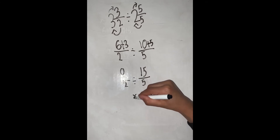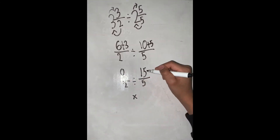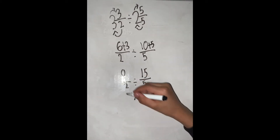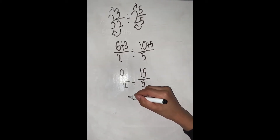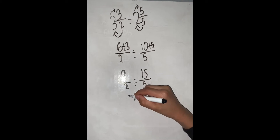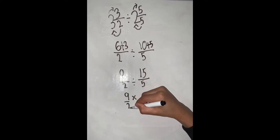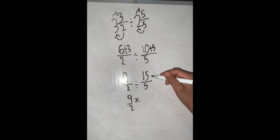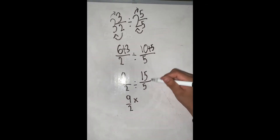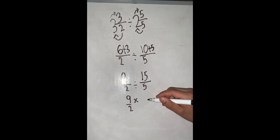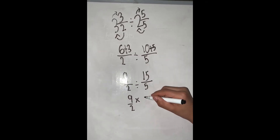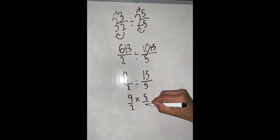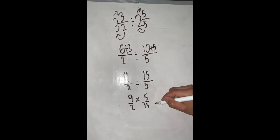So, multiplying is the same as dividing. So we have 9 over 2, and then we have to flip the second fraction over to make it make sense. So, 5 over 15.